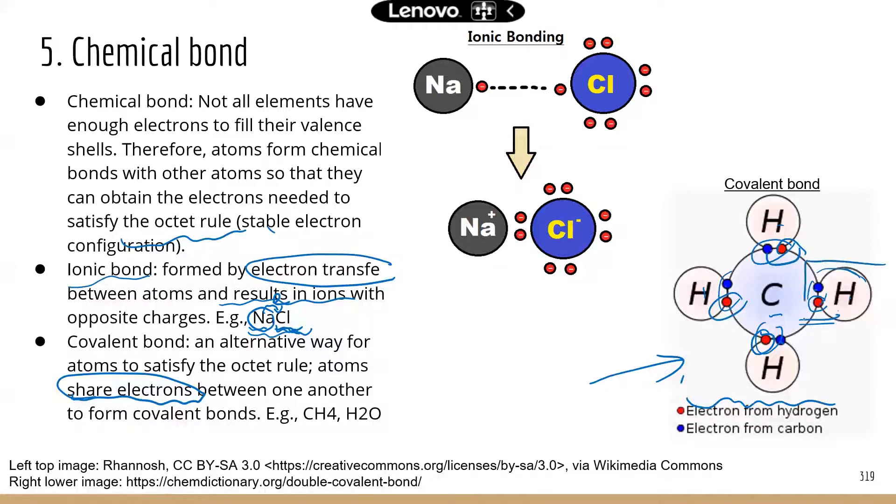For hydrogen, you can see for each hydrogen, now there are two electrons, which is also good because hydrogen has only one electron shell. So it can only have two in that valence shell.